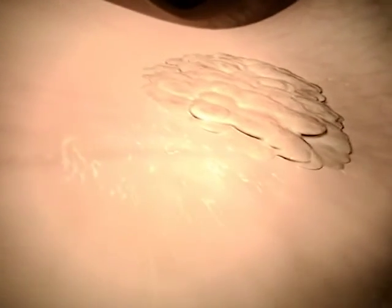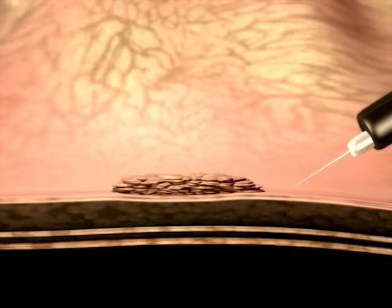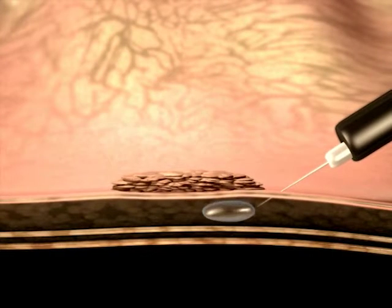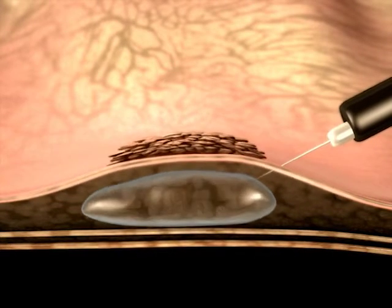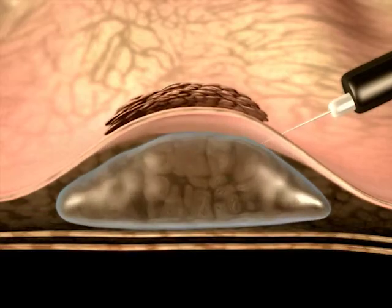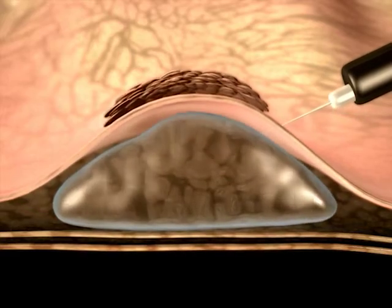Flat polyps, which lie close to the surface of the bowel wall, can be harder to detect, but may also undergo malignant change and require removal. When removing flat polyps during colonoscopy, saline is injected into the submucosa around the polyp using a sclerotherapy needle. This elevates the polyp above the level of the bowel wall and facilitates removal by snare.